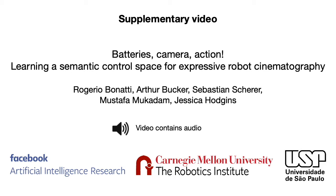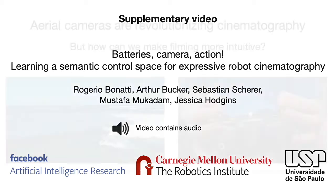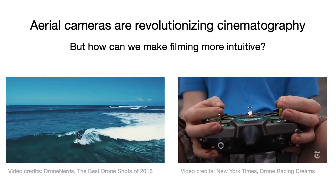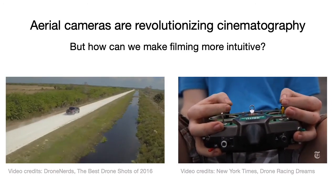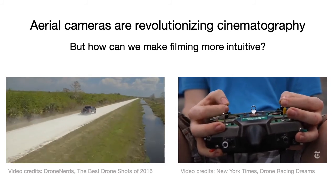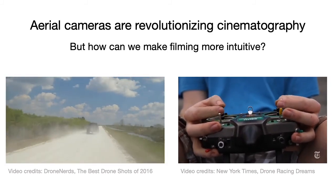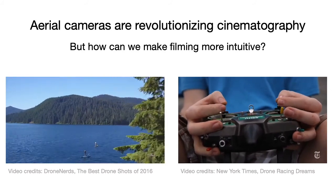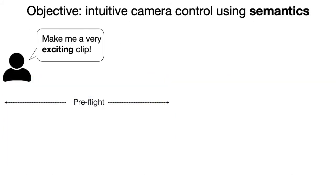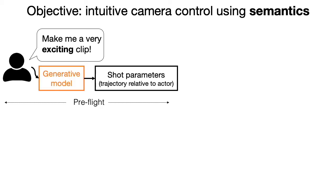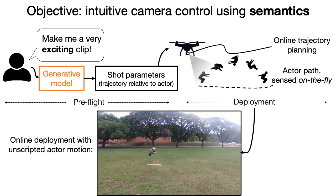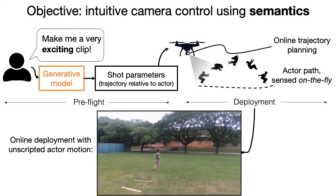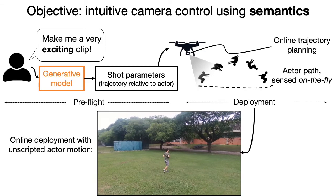In this work, we learn a semantic control space for expressive robot cinematography. Aerial cameras are revolutionizing the way we can record movies, but controlling a camera is still really hard and involves controlling very unintuitive parameters from the aircraft's positions, angles, and velocities. Our objective is to learn a semantic control space so that a user can interact with the system through a very intuitive interface, sending commands such as 'make me a very exciting clip,' which is then translated through a generative model and passed on to the robot as a trajectory for the camera.